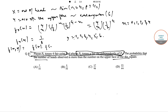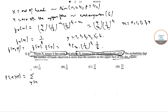Since X and Y are independent, the joint PMF is f(x, y) = 4Cx * (1/2)^4 * (1/6). The required probability P(X > Y) is calculated with Y ranging from 1 to 6 and X greater than Y.